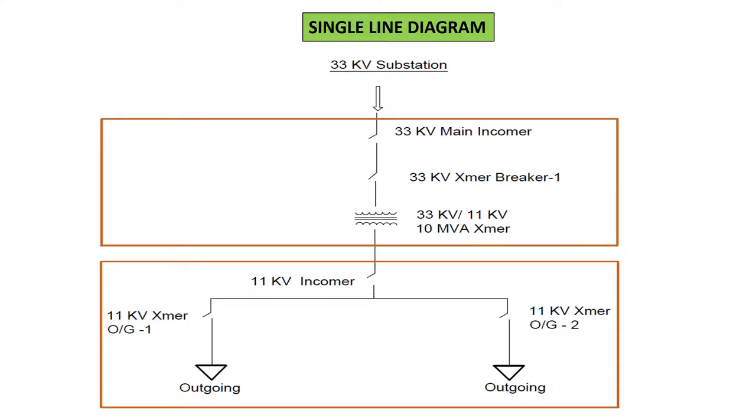Here you can see a single line diagram. We have considered a very short and simple SLD so you can understand the basics. We have a 33 kV incomer coming to the plant, then a transformer breaker and a step-down transformer. After that, on the 11 kV side, first the incomer comes, then two outgoing feeders.